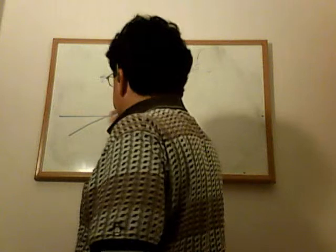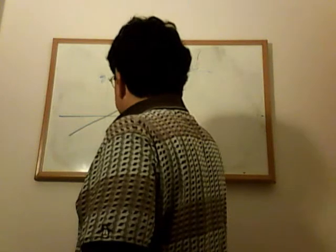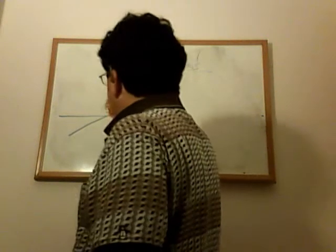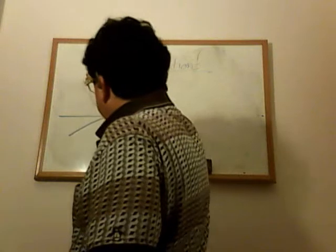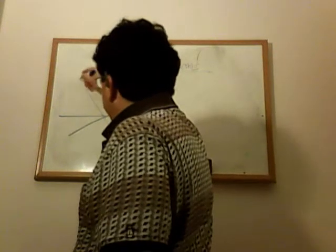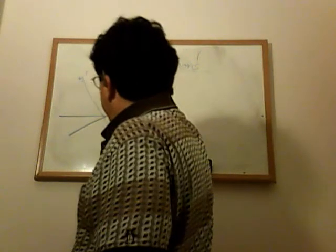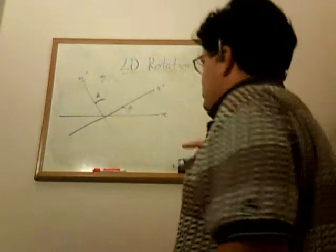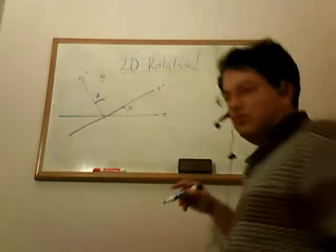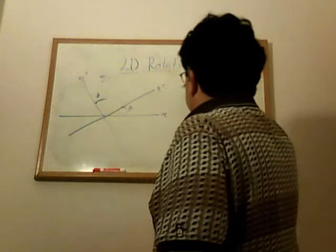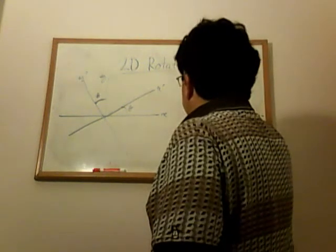We take some angle theta and we produce new axes, x prime and y prime, at angle equal to theta. And we have a transformation of coordinates. The way this looks is we have x prime, y prime.